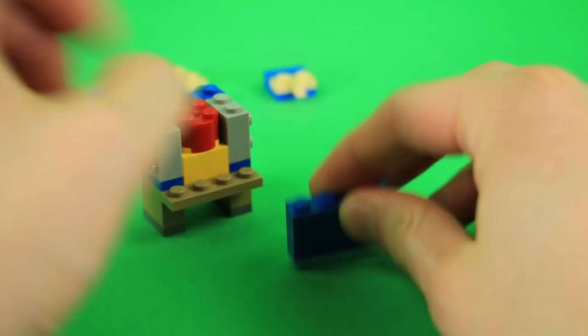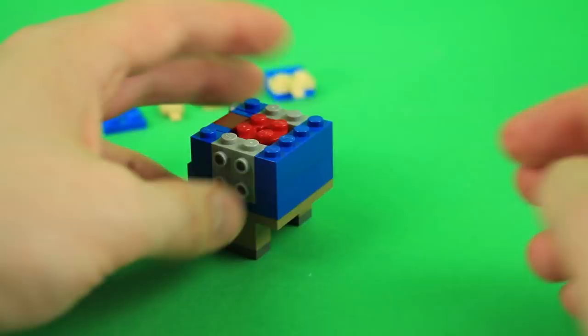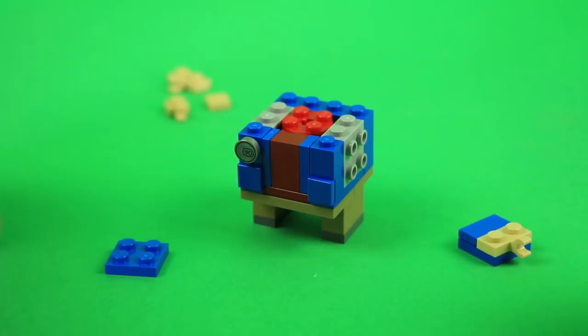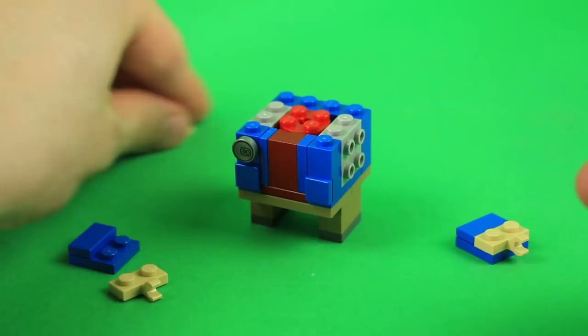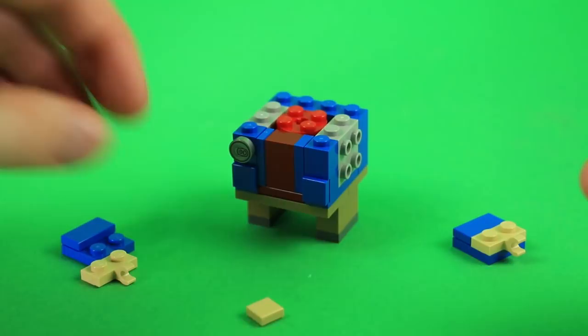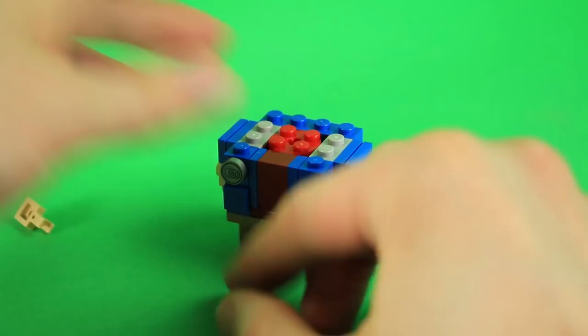Then for the arms, take a 2x2 in blue, plus a 1x2 plate. And then one of these 1x2 with a clip centered on it in tan for the hands. If you don't have those, because they're easy to run out of, 1x1 plate with clip and a tile. And then you just offset them and mirror them per side.